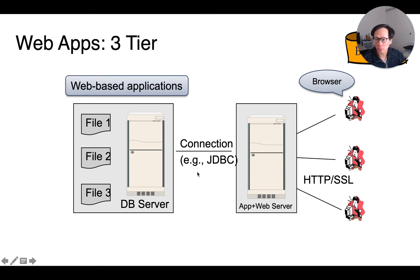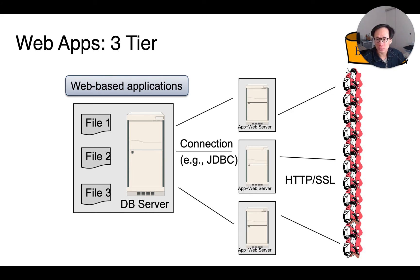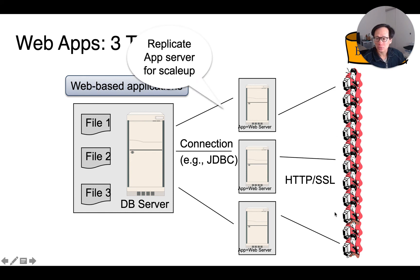This is how web applications are structured. We can scale up the number of application servers and have each handle a different subset of clients. We can have different web servers hosted in geographically different places — for instance, one server handling clients from California, another handling those from New York. Each client's application state, if any, is kept on one single web server.